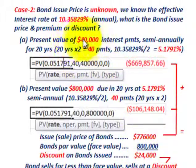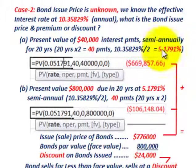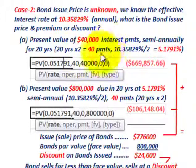We figure out the present value of the $40,000 interest payments — semi-annually for 20 years, so 40 payments. We know the effective interest rate; divide by 2 to get the semi-annual period rate of 5.1791%. Plug that into the calculator: rate of 5.1791%, 40 periods, $40,000 per period. The present value of those interest payments comes out to $669,857.